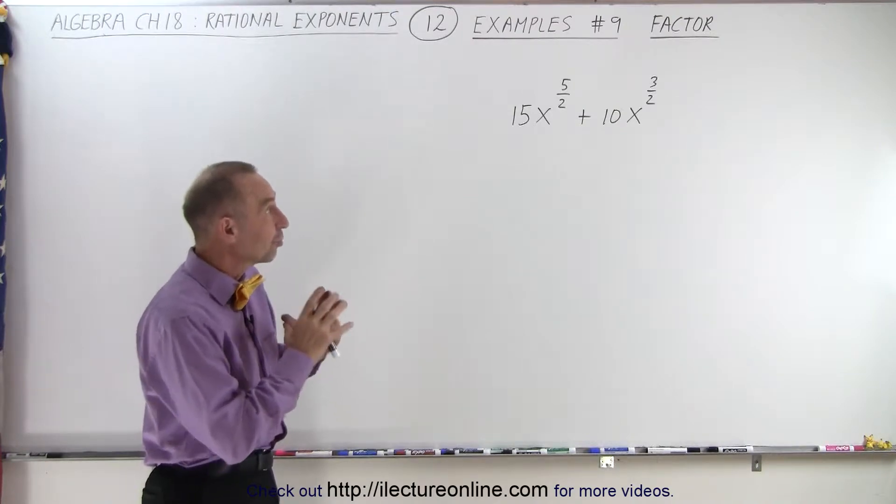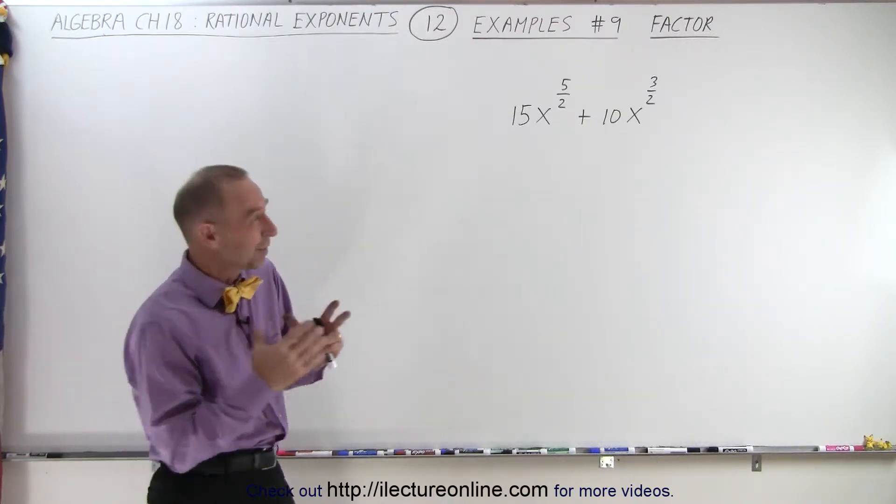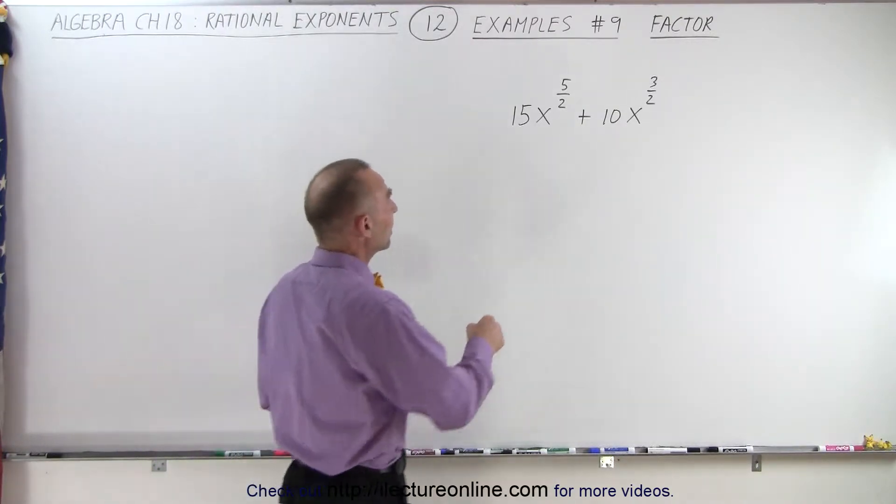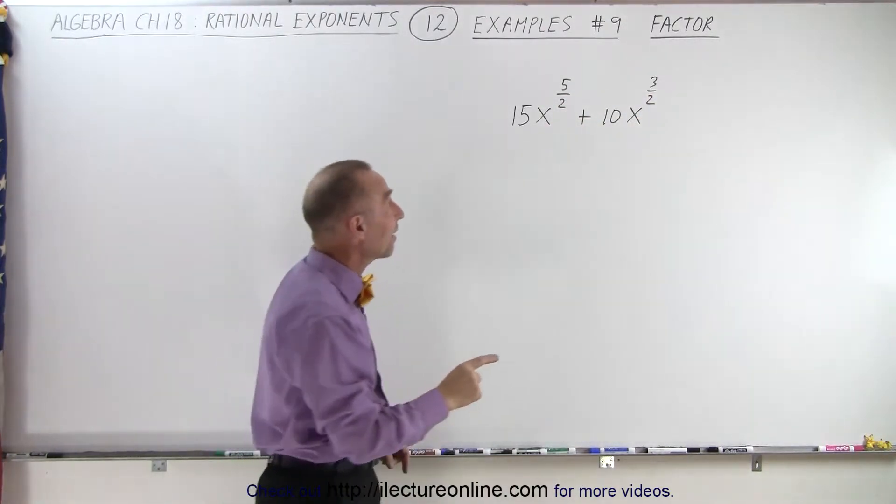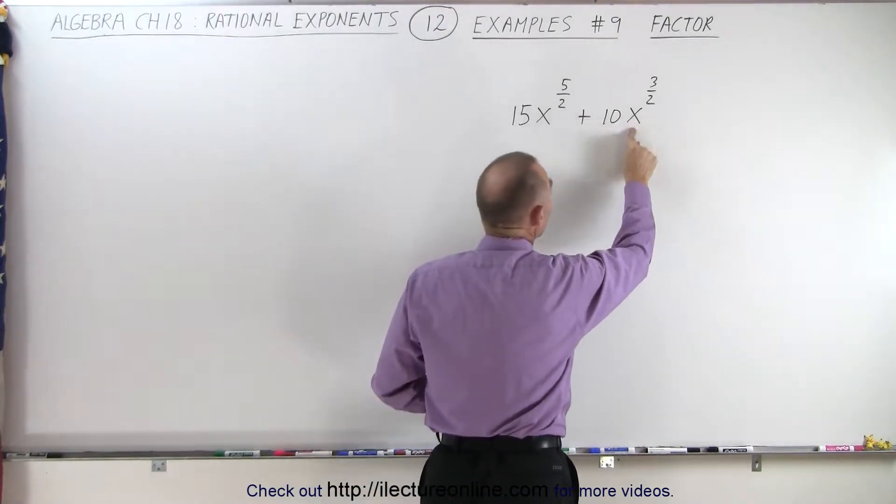The key, again, is to find the smallest exponent, which doesn't appear that obvious initially, but here you have five halves and there's three halves. Well, three halves is smaller than five halves, so we're going to factor out an x to the three halves.